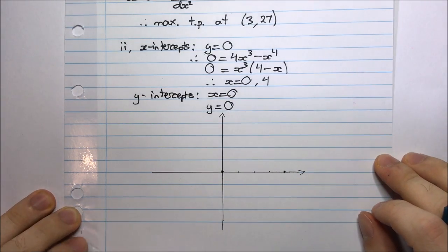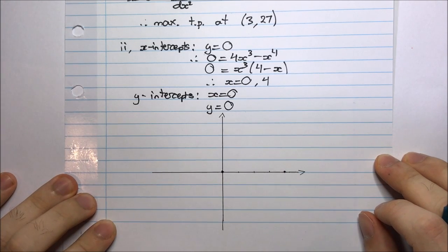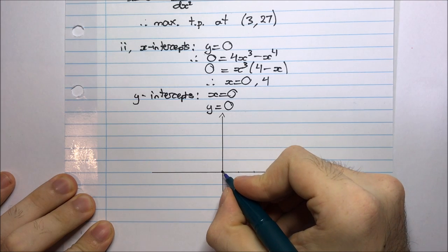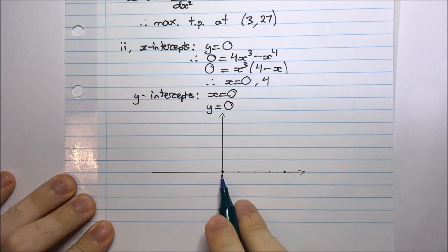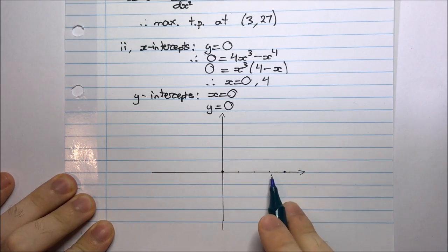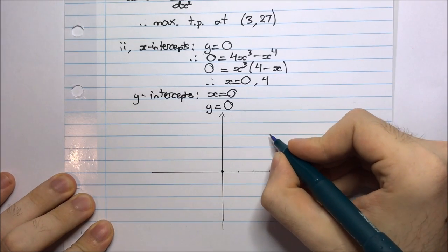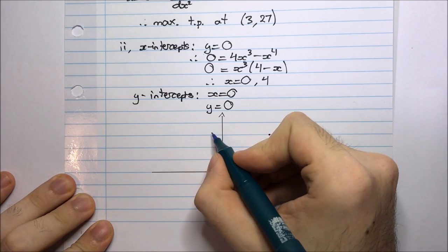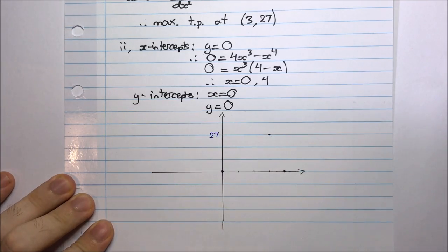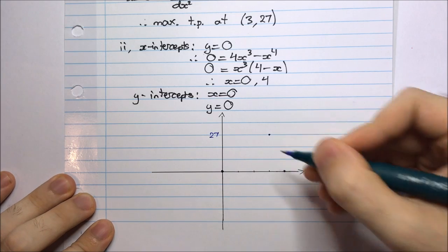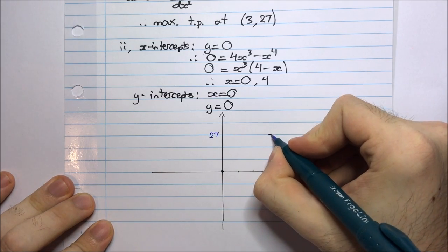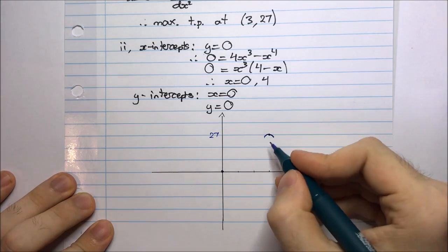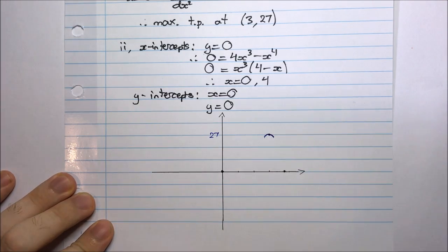From part i, I have two stationary points: a horizontal point of inflection at the origin, and at the point (3, 27) — somewhere up here. I have a maximum turning point there. So I know that my function reaches a maximum point and then comes back down.